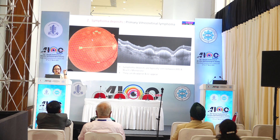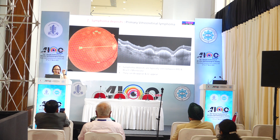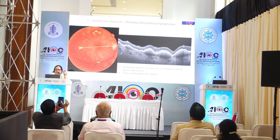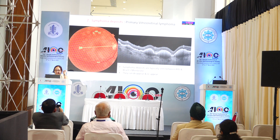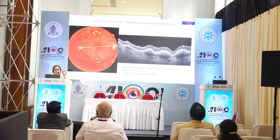If you have lesions which are yellowish, which are subretinal, and you are not sure what they are, get an OCT through them. The OCT shows these bumps, and you see something deposited between the RPE and Bruch's membrane. This is most likely to be due to lymphoma.